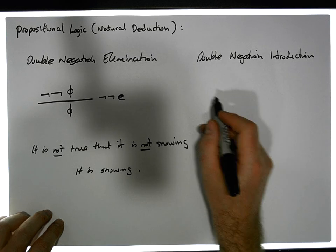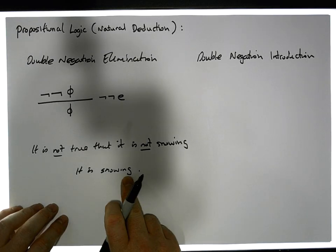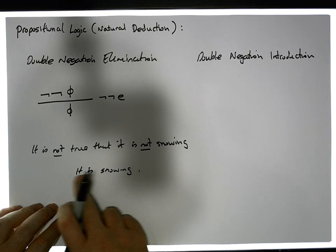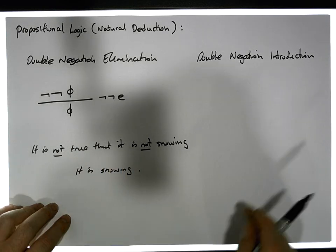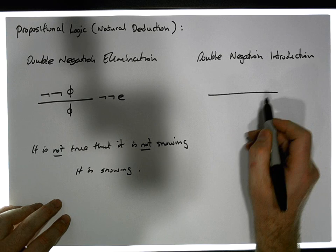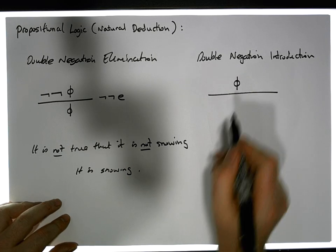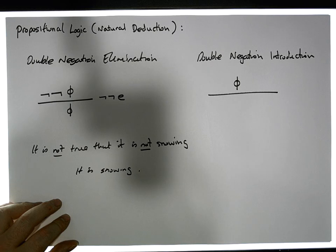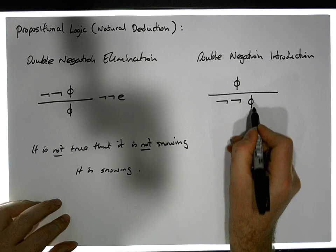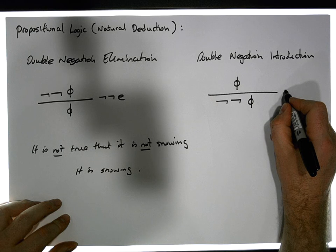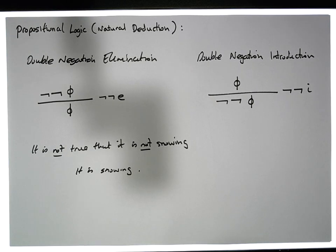We can also reverse that and introduce a double negation. If it is snowing, then it is also true that it is not true that it is not snowing. So if we have a formula that's true, its double negation also holds. This is the introduction of a double negation.